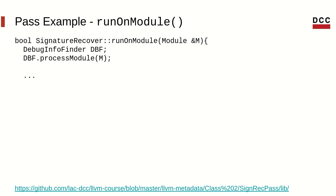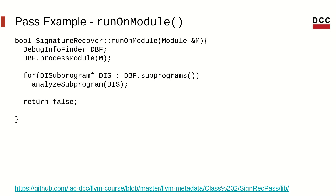The title of the slides shows the function in which the code is defined. To gather the debug information of the module, we will use the DebugInfoFinder. First of all, we need to process the module. Once the processing is done, we can iterate over the subprograms and analyze each one individually.